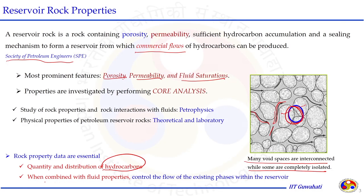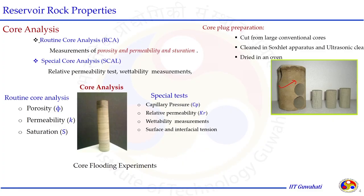When rock properties are combined with fluid properties, we get better control on the flow profile of different fluids — oil, gas and water — from the reservoir to the surface. Core samples are taken out from the reservoir rock. This large chunk is plugged to get a specific diameter. Generally, cores are 1 inch or 1.5 inches in diameter, and the length varies from 4 to 12 inches depending on the analysis or instrument available.